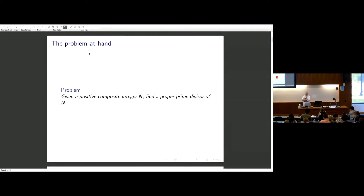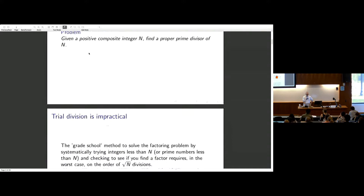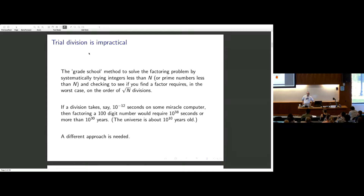The problem is that we're given a composite integer n and we want to find a prime divisor of it. This isn't exactly the same as factoring it, because for the moment we'll be happy if we can find one proper prime divisor. We may end up with a number which has other factors that we can't further factor, but one step at a time. The method you learn in grade school is to start trying numbers. If you're a little more sophisticated, you try prime numbers, dividing your number by each prime in turn. You stop when you reach the square root of the number, and you either find a factor or you don't.